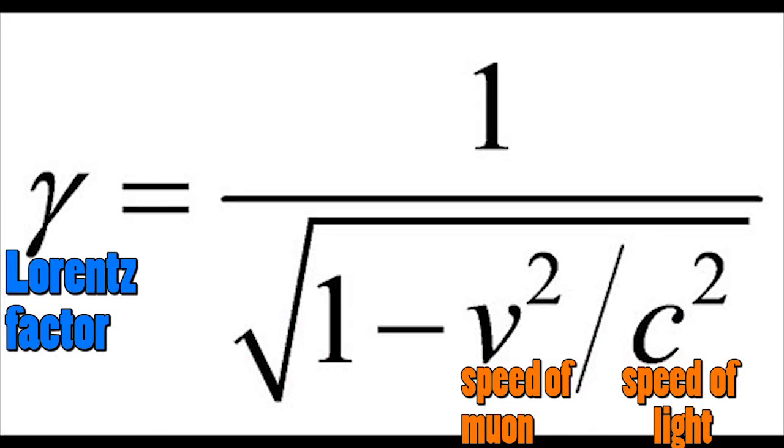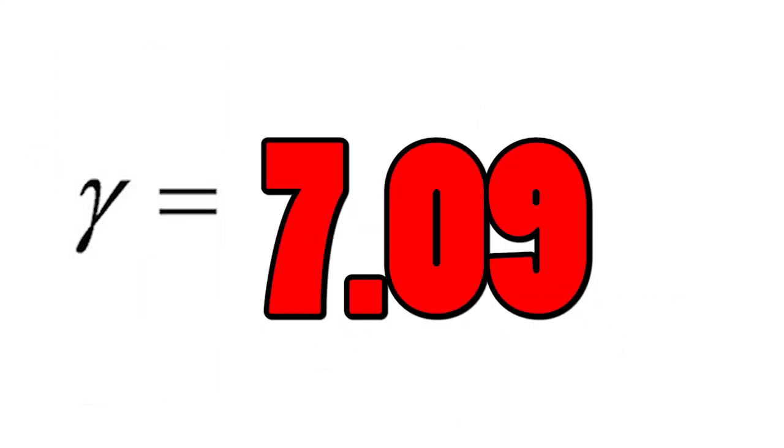So when we calculate the Lorentz factor, that is how much slow the time would tick, the factor by which time would tick slow is exactly 7.09. You can even calculate this by the equation given on the screen.